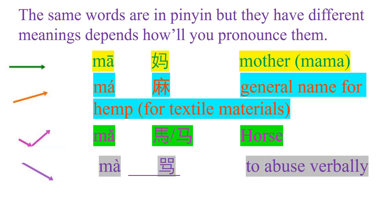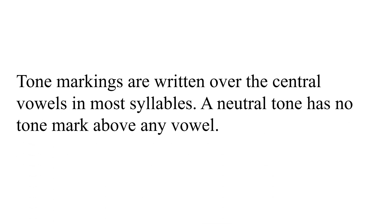For example, 'Nǐ hǎo ma' — the neutral tone MA is always used at the end of a question. Tone markings are written over the central vowels in most syllables. The tone marks are placed over the central vowels. A neutral tone has no tone mark above any vowels.